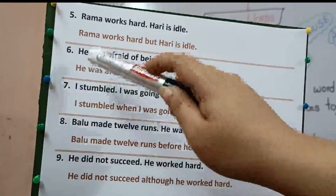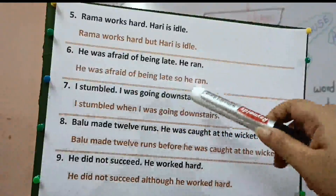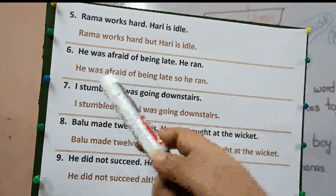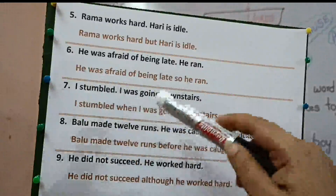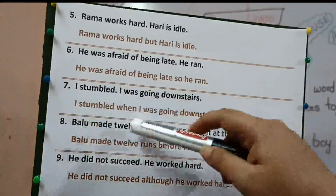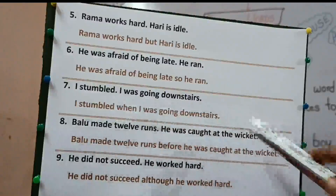Sixth part: he was afraid of being late. He ran. He was afraid of being late, so he ran. 'So' is used as it's giving a reason. Seventh: I stumbled. I was going downstairs. 'Stumbled' means you attempted to fall down but you don't. I stumbled when I was going downstairs. Here you are denoting the time when you stumbled — when you were going downstairs — so we will use 'when' as a conjunction.